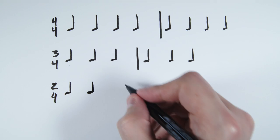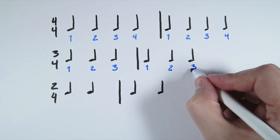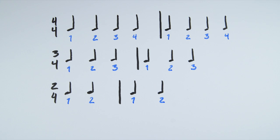Quarter notes get a number. So in 4-4 it would be 1-2-3-4, 1-2-3-4. In 3-4 it's 1-2-3, 1-2-3. In 2-4 it's 1-2-1-2.